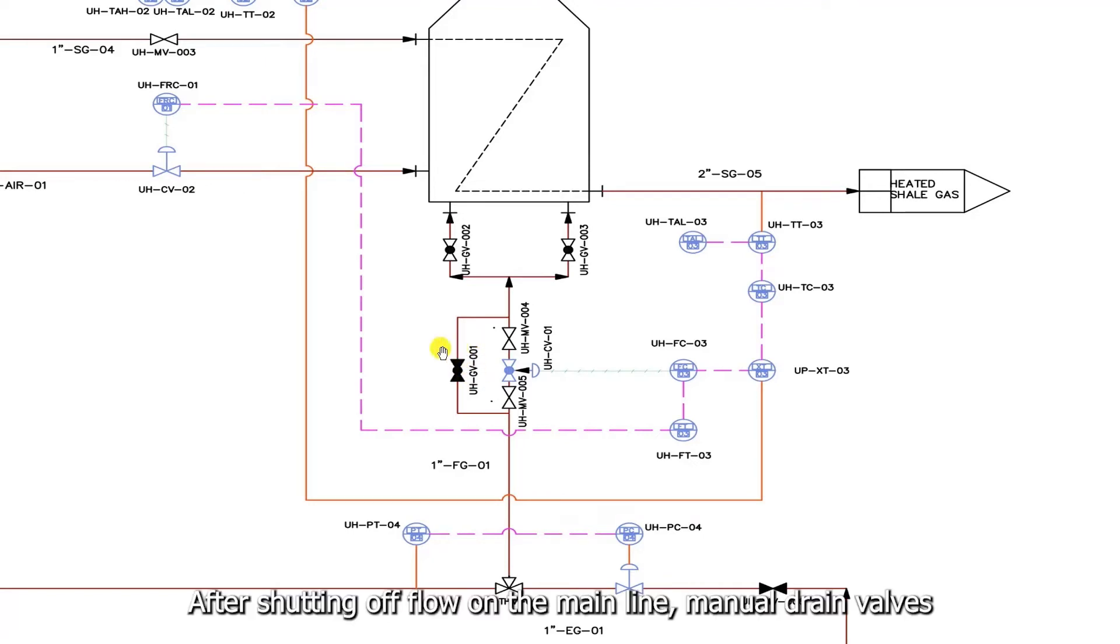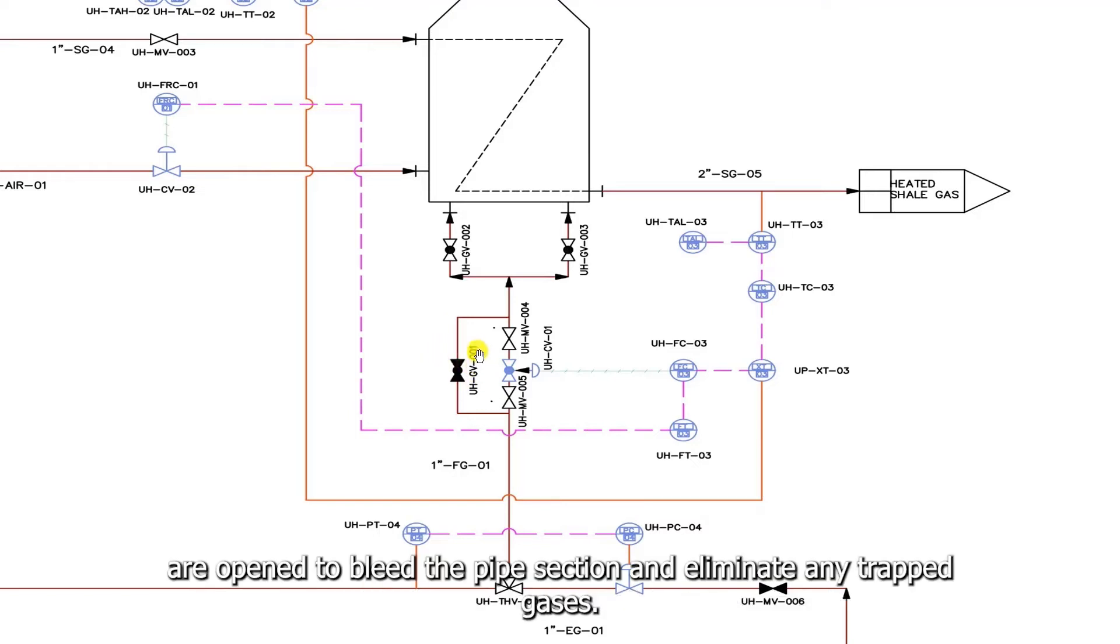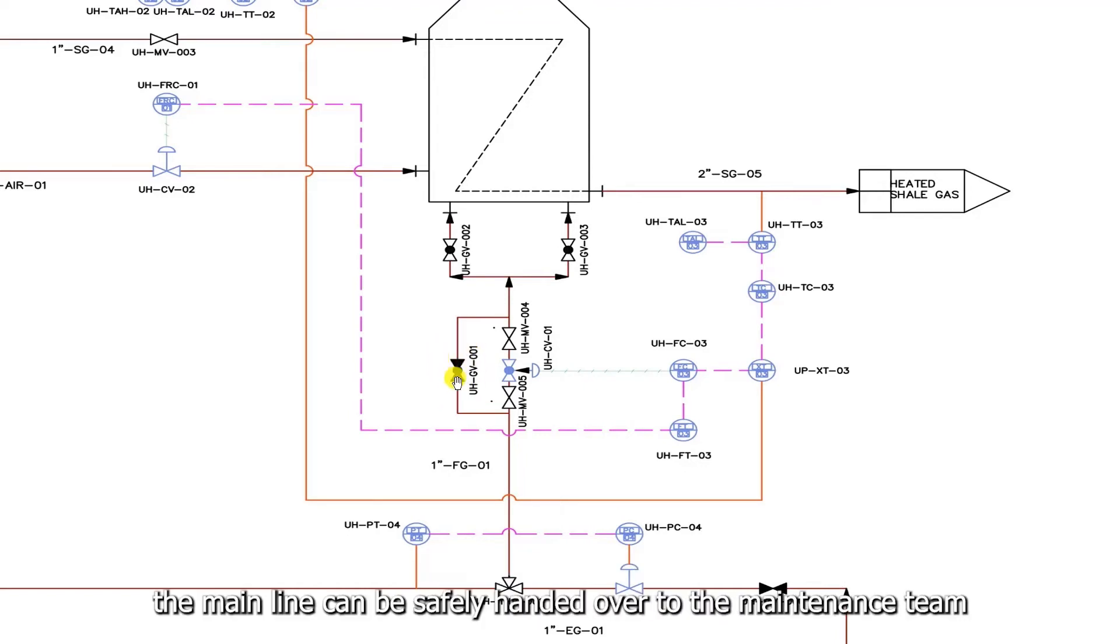After shutting off flow on the main line, manual drain valves, which are not depicted on the diagram, are open to bleed the pipe section and eliminate any trapped gases. Following this action, the main line can be safely handed over to the maintenance team for control valve replacement and repair.